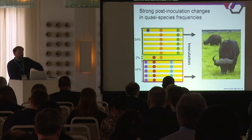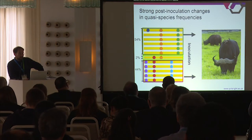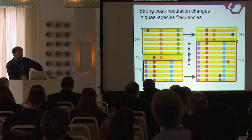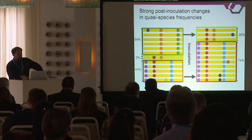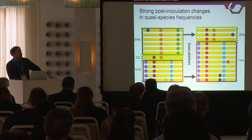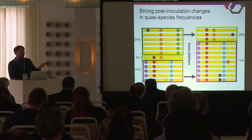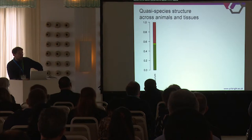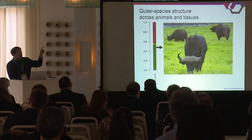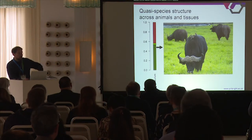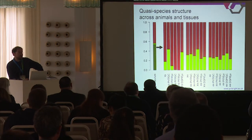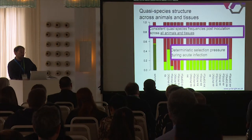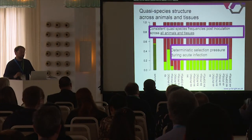What is striking is what happened after inoculation at 35 and 400 days in buffaloes. After this complex SAT1 inoculum was inoculated, there was a striking change in the frequencies of the two quasi-species observed in the buffaloes at both 35 and 400 days post-inoculation. You see that one quasi-species disappeared in every single animal and tissue, and the other two changed their frequency significantly in a consistent way across all animals and tissues. This is a strong signal that there has been deterministic selection pressure during the acute infection phase.